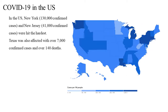In the U.S., New York with 130,000 confirmed cases and New Jersey with 41,000 confirmed cases were hit the hardest. Texas, my home state, was also affected with over 7,000 confirmed cases and over 140 deaths.